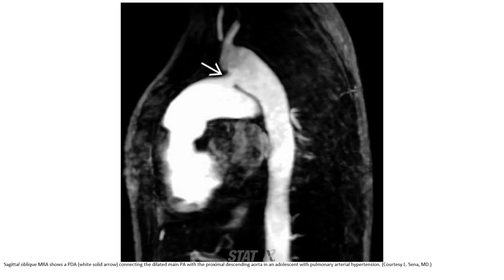Cardiac CTA showed a PDA device already placed, connecting the left main pulmonary artery with the proximal descending aorta in relation with pulmonary artery hypertension.